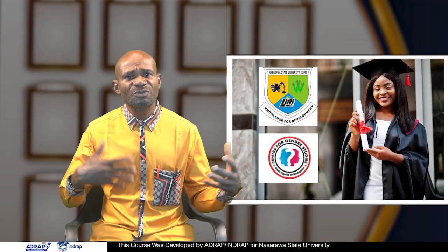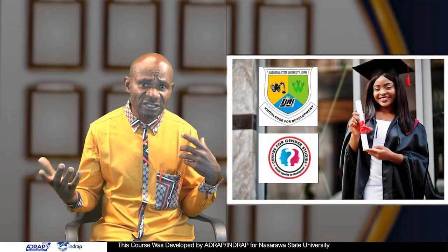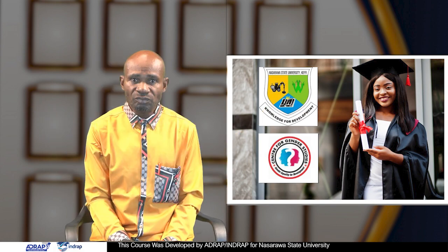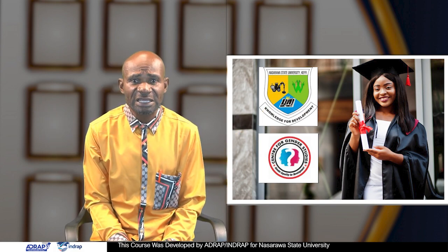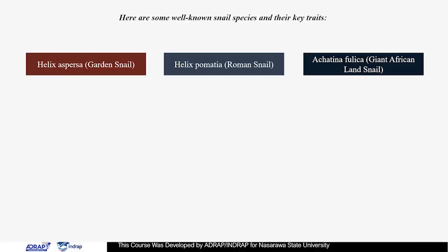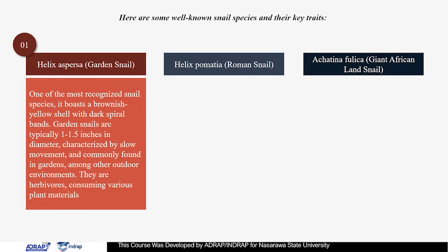There exist numerous snail species worldwide, each distinguished by unique characteristics and adaptations. Here are some well-known snail species and their key traits. Helix aspersa, or garden snail: it is one of the most recognized snail species, boasting a brownish-yellow shell with dark spiral bands. Garden snails are typically 1 to 1.5 inches in diameter, characterized by slow movement and commonly found in gardens and outdoor environments. They are herbivores, consuming various plant materials.